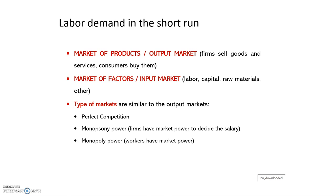In a perfectly competitive market, there are going to be many firms who want to hire workers and many workers who want to offer their work. In the input market, consumers become workers — they offer their work instead of demanding. While firms are on the demand side, because they are going to demand workers, labor, and hours of work. In perfect competition, there are many firms demanding workers and many workers offering their work.